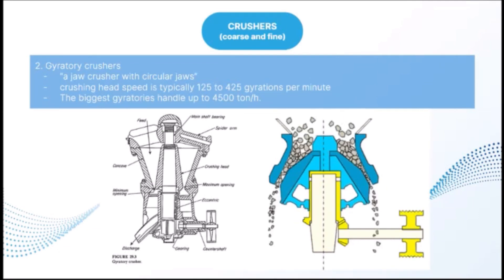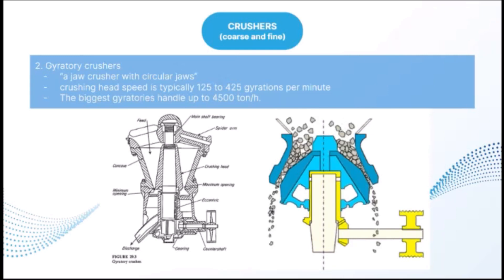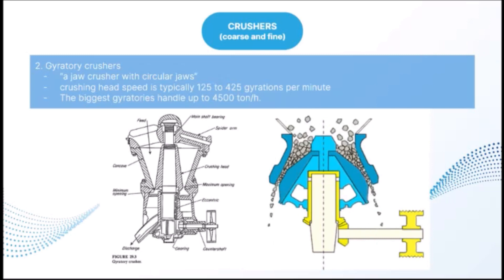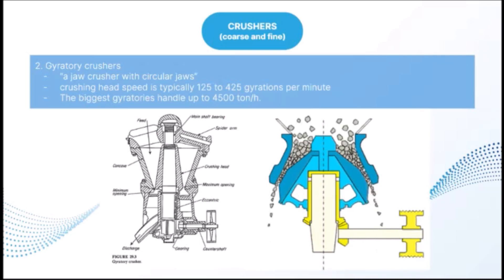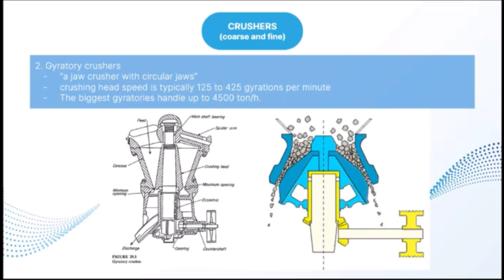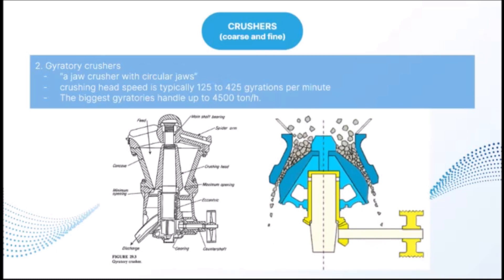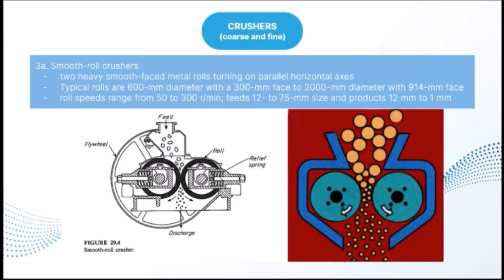A gyratory crusher may be viewed as a jaw crusher with circular jaws, crushing material at some point at all times. A conical crushing head gyrates inside a funnel-shaped casing open at the top; the crushing head is carried on a heavy shaft pivoted at the top, running at 125–425 gyrations per minute. Because part of the crushing head is always working, discharge is continuous rather than intermittent. The biggest gyratories handle up to 4,500 tons per hour. Capacity varies with jaw setting, impact strength of feed, and speed of gyration, and is nearly independent of the compressive strength of the material.